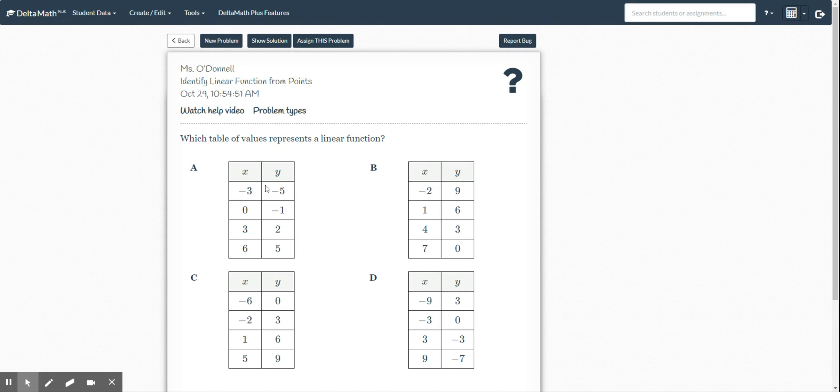Okay, so this is where we really need to clue into those first differences. When we do first differences from a table and we can find that constant rate of change, it tells us if we have a linear function or not.